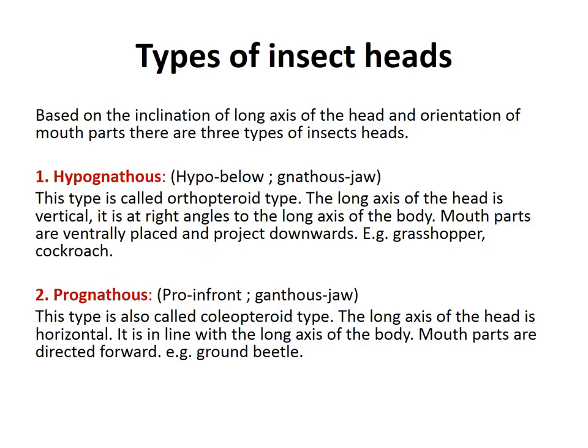The types of insect head: based on the inclination of the long axis of the head and the orientation of the mouth parts, there are three types. First is hypognathous — 'hypo' means below, 'gnathus' means jaw. This is mainly the orthopteran type. The long axis of the head is vertical, perpendicular to the body — at right angles to the long axis of the body. Mouth parts are ventrally placed and project downwards, as in grasshoppers and cockroaches.